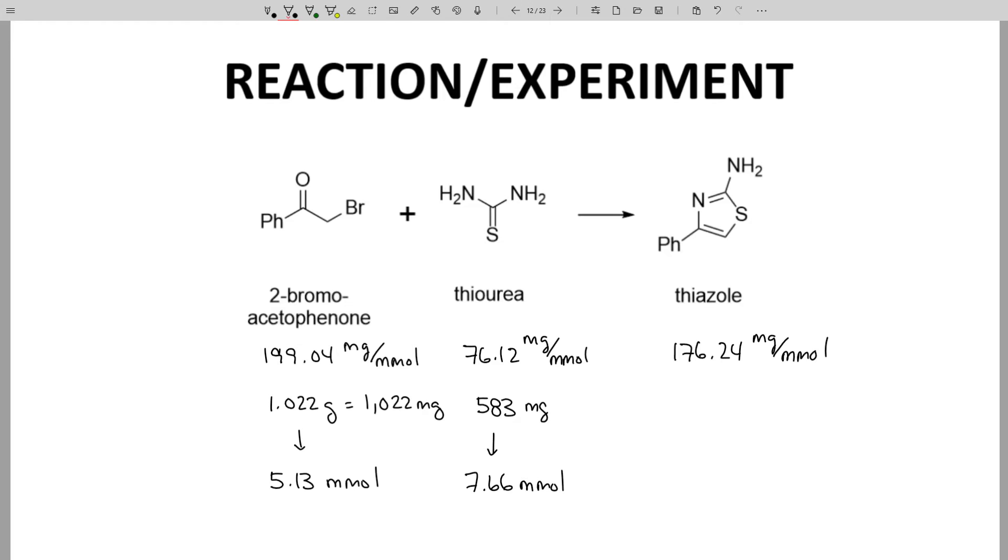For the thiourea, I weighed out 583 milligrams. And if you divide that out 583 divided by 76.12, you get 7.66 millimoles. As you can see, the bromo acetophenone, this is our limiting reagent. Since these two reagents react in a one-to-one ratio, we're going to run out of the bromo acetophenone first. Therefore, at most, we're going to get 5.13 millimoles as our theoretical maximum yield. Okay, now let's see what we got. So we weighed out 903 milligrams of our product. And if we divide that out, we find that we got 5.12 millimoles. So this is our actual yield in terms of millimoles. If we then divide actual by the theoretical times 100, we get 99% yield.